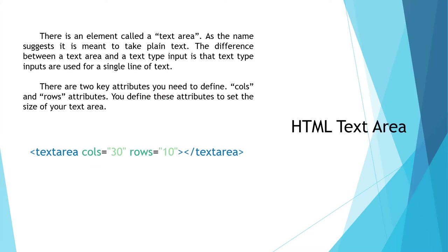In HTML, for text with multiple lines we're going to be using the textarea element. With input type text you can only get a single line of text input, meanwhile with the textarea element you can have multiple lines of text. When creating a textarea element we're going to be using the cols and rows attributes to define the amount of columns and rows.